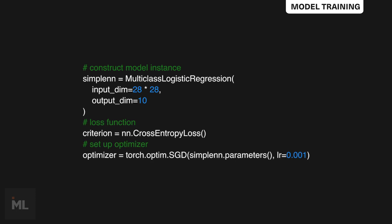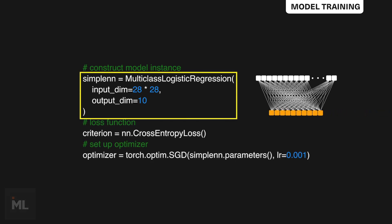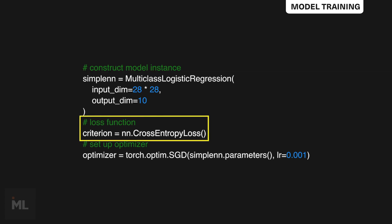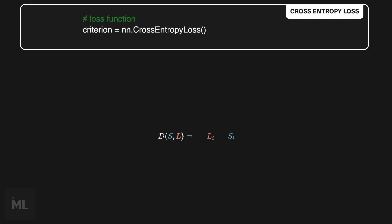For model training, first we need to construct a model instance using the model class we defined before. Then we need to define a loss function. Here, we are using cross entropy as the loss function.